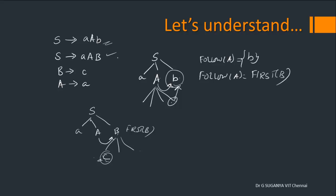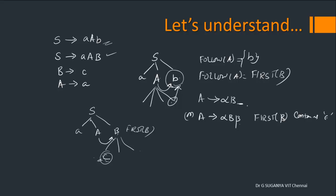The third important rule: if you have a production like A gives α B, or A gives α B β where FIRST of β contains epsilon, both cases effectively reduce to A gives α B at the end. In the first case FOLLOW of B has no following symbol, so it is epsilon. In the second case FOLLOW of B is FIRST of β, but FIRST of β contains epsilon, so epsilon leaves that production as A gives α B.